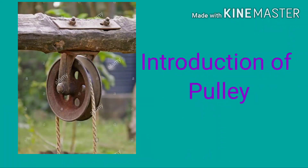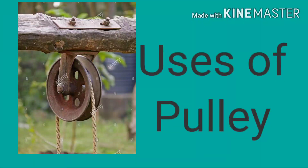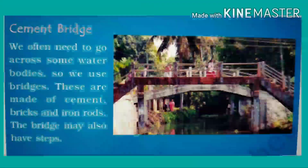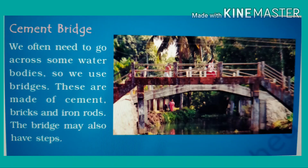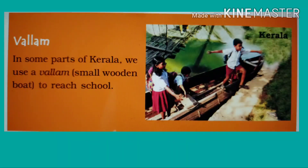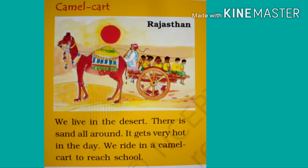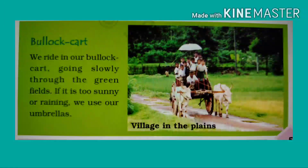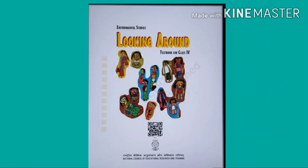Today's topics are: number one, introduction of pulley; number two, uses of pulley; number three, introduction of cement bridge; number four, introduction of wallam; number five, introduction of camel cart; and number six, introduction of bullock cart. Today we will cover six topics from EVS Class 4, and the name of this chapter is Going to School.